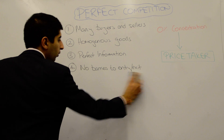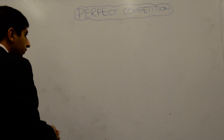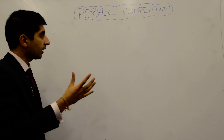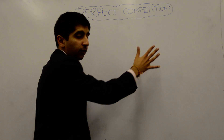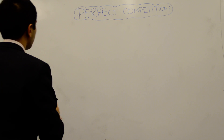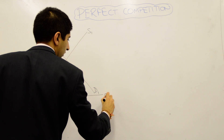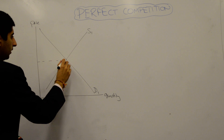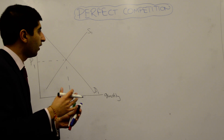We can map what this looks like diagrammatically. We have to draw two different diagrams together. One diagram looks at the market — what's happening in the industry — and one shows what's happening to the firm given the price set by the market. Starting with a basic demand and supply diagram: equilibrium price occurs where demand and supply intersect, giving us price P1 and quantity Q1.